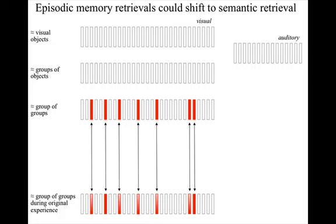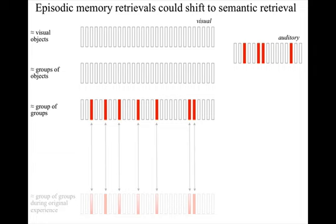But if the memory is often recalled, the original auditory columns that seed the recall are often active just before the columns that are the memory recalled. So the auditory columns could acquire recommendation strengths in favor of indirect activation of the memory recall columns on the basis of frequent past activity just after the auditory column activity. So if a memory is often recalled, the mechanism for recall can gradually shift from simultaneous past receptive field expansion to frequent past activity.